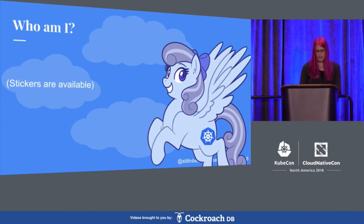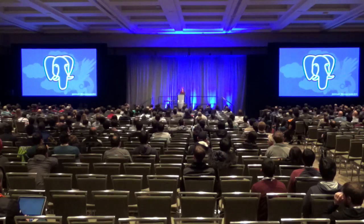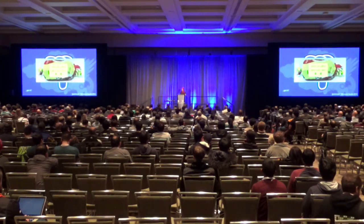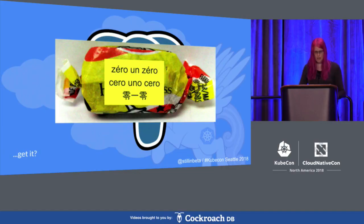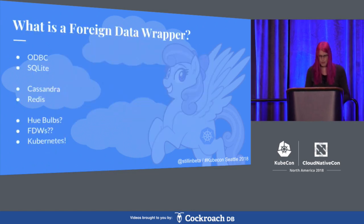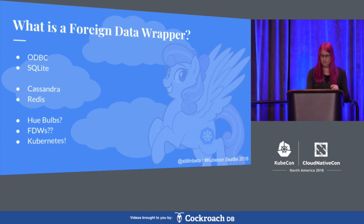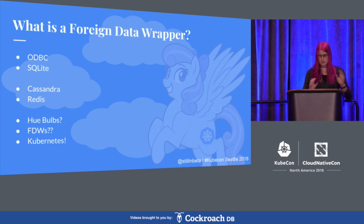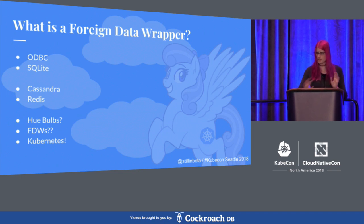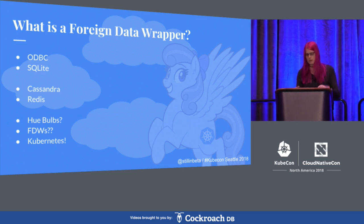I'm not here to talk about any of that, though. I'm here to talk about Postgres. Specifically, I'm going to talk about Postgres foreign data wrappers. Foreign data wrappers are a way for Postgres to query and manage data not stored in the database itself. They can be mundane, like ODBC or SQLite, something more exotic like Cassandra or Redis, or even weirder. There are FDWs for hue bulbs. There's a list of FDWs, and you can use an FDW to query that list.